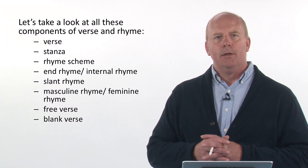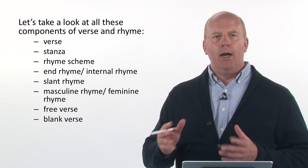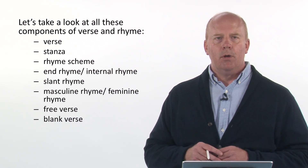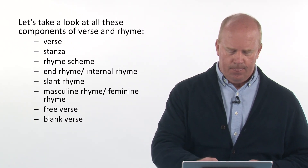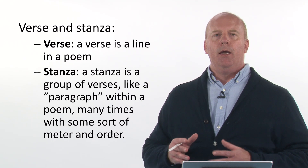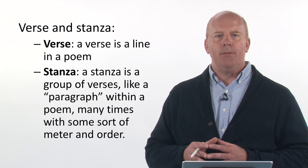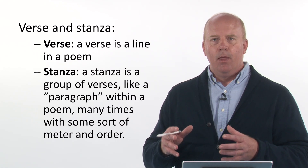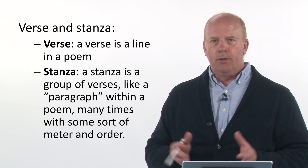Let's take a look at the components of verse and rhyme. We're going to look at verse, stanza, rhyme schemes, end rhyme, internal rhyme, slant rhyme, masculine rhyme, feminine rhyme, free verse, and blank verse. A verse is basically just a line in a poem, and a stanza is a group of verses — kind of like a paragraph within a poem — which many times will have some sort of meter and order.